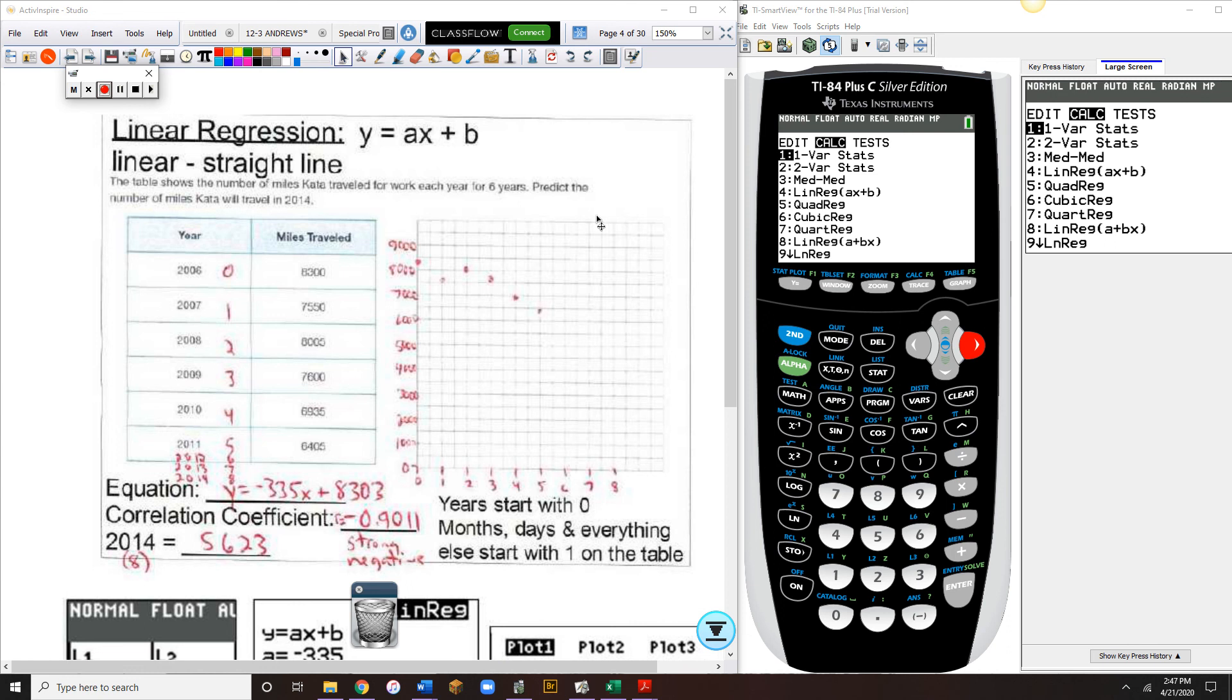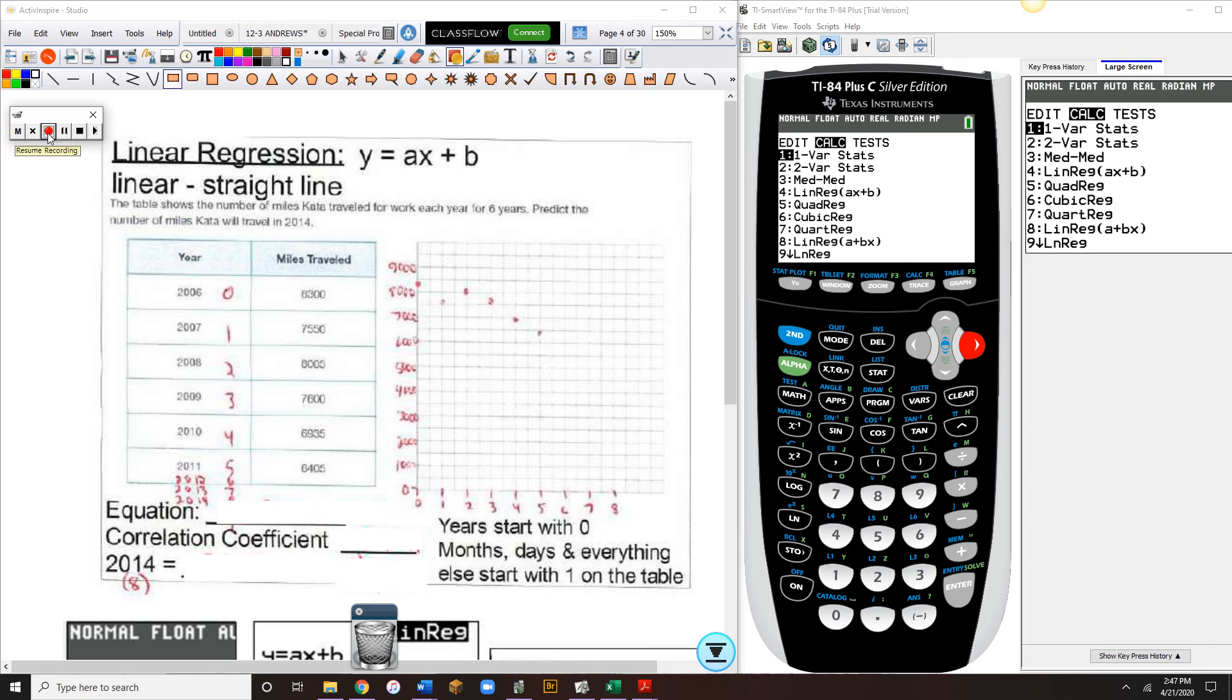The main focus of our lesson right now is a linear regression. So we've got a table here with years and miles traveled. The table shows the number of miles Kate traveled for work each year for 6 years. Predict the number of miles Kate will travel in 2014.